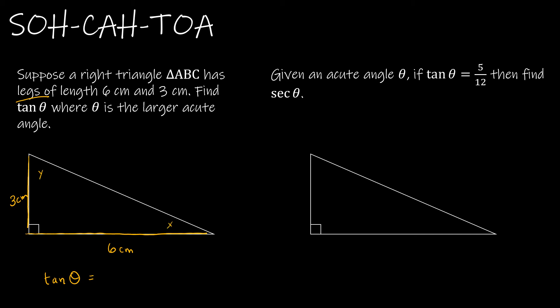It says theta is the larger acute angle. Which one's larger? Obviously the one across from the longer side. So this guy's going to be theta. If I need to find tangent of theta, tangent is opposite over adjacent. So I didn't have to do any math at all. Tangent of theta is 2.